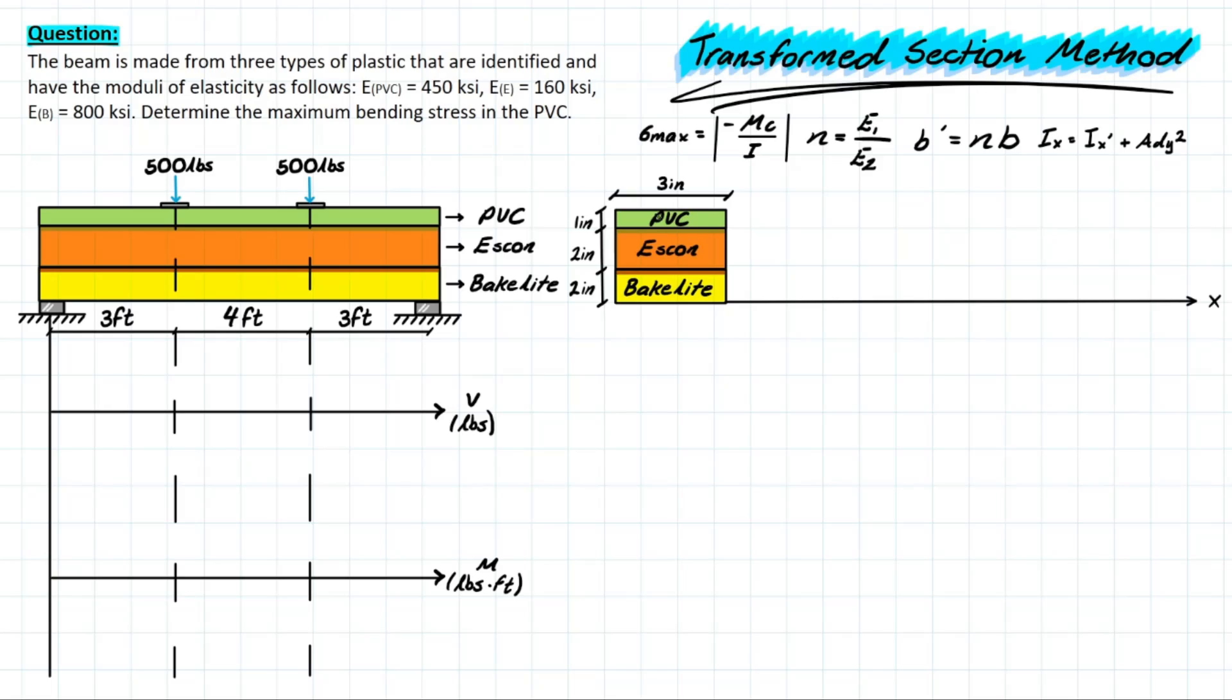The first thing we need to do whenever we have a max bending stress problem is our end goal is to get a max moment to plug into this formula. So the first thing we need to realize is, let's solve for the bending moment diagram. That's going to be super easy because we have a symmetric beam that's symmetrically loaded with 500 pounds at each of these symmetric intervals. So that means we're going to have equal and opposite support reactions of 500 pounds here and 500 pounds here. So our shear diagram is going to look something like this.